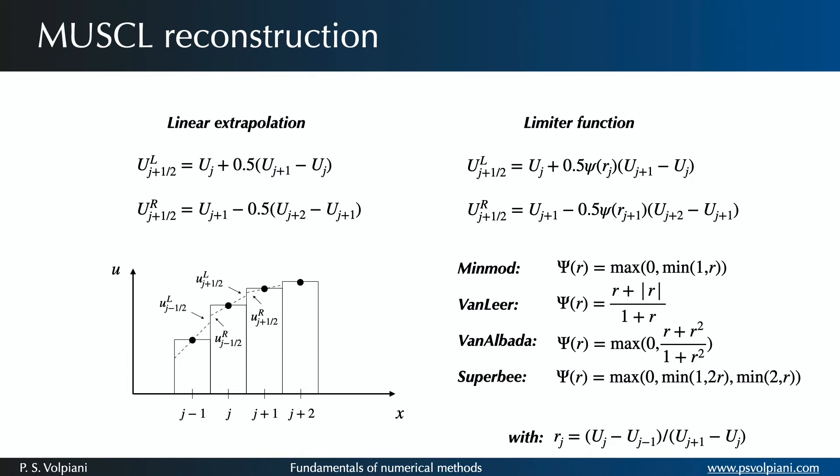In this framework, a function Psi that limits the slope of the piecewise approximations must be introduced to avoid the spurious oscillations that would otherwise occur around discontinuities or shocks. The limiter is equal to 0 when R is less than 0, and is equal to unity when R equals to 1.